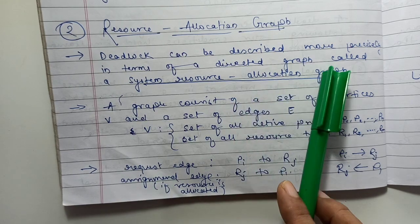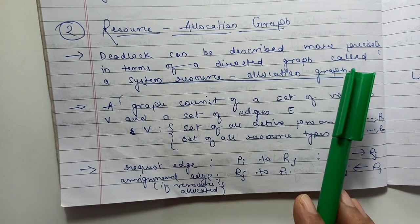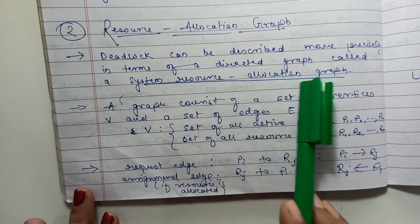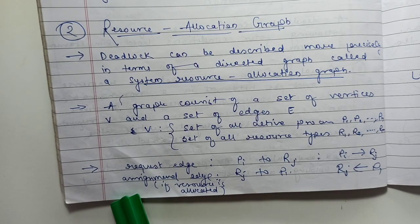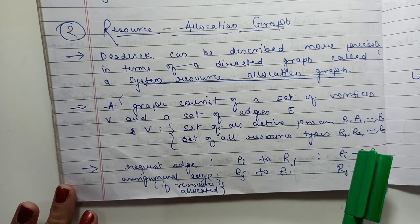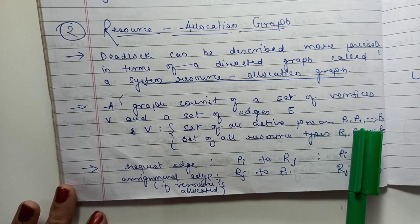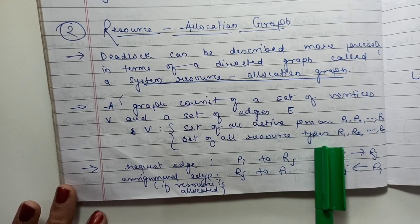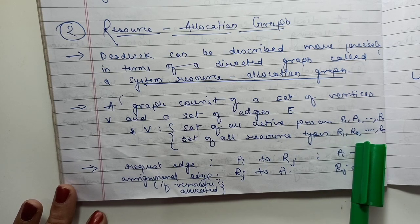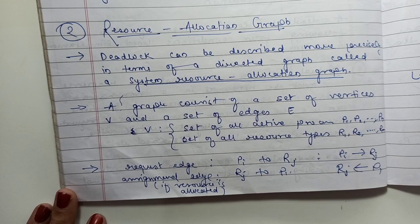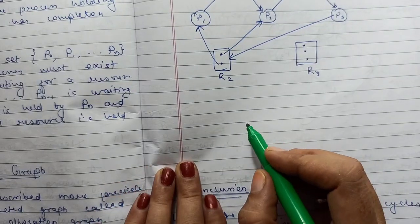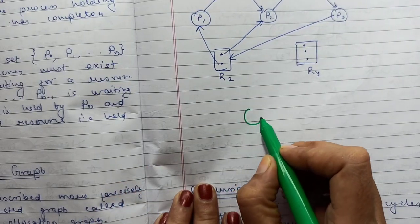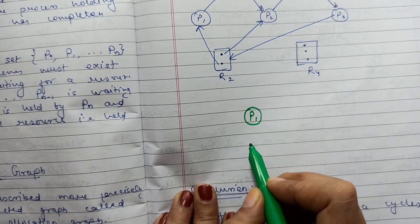A deadlock can be described more precisely using a directed graph called a system resource allocation graph. A graph consists of vertices and edges. Here we have two types of vertices: one type represents processes and another type represents resources. There are also two types of edges: request edges and assignment edges.